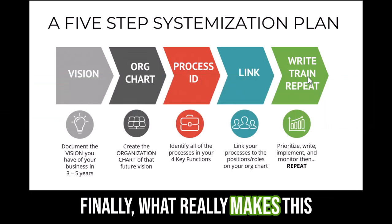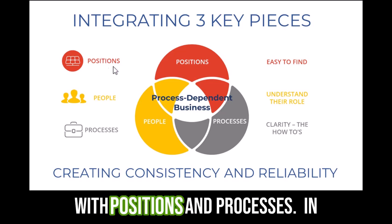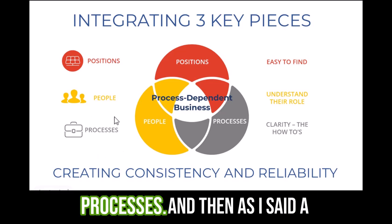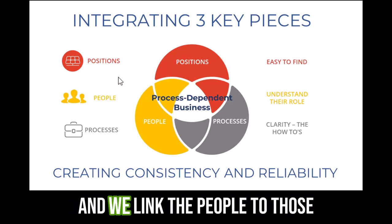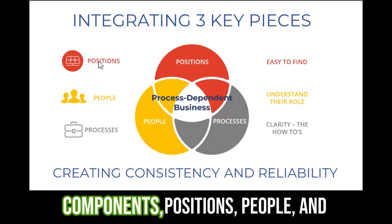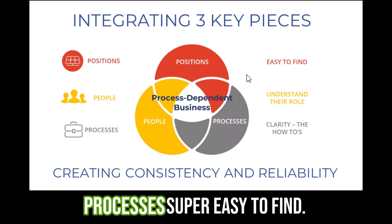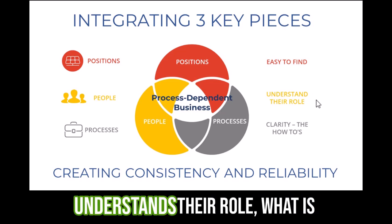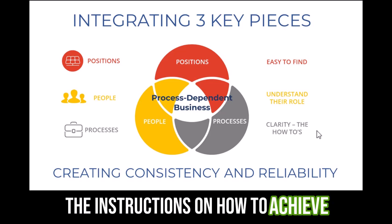What really makes this happen is the touchstone process. What makes touchstone unique is that we integrate people with positions and processes. We identify all of your positions, we identify all of your processes, and then we link those to the positions on your organization chart. We add your people and link them to those positions. So we integrate these three key components — positions, people, and processes — which makes the processes super easy to find, creates absolute clarity of function so everybody truly understands their role and what is expected of them, and clarifies the instructions on how to achieve that.